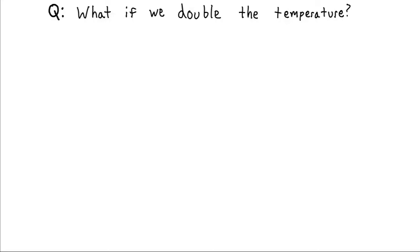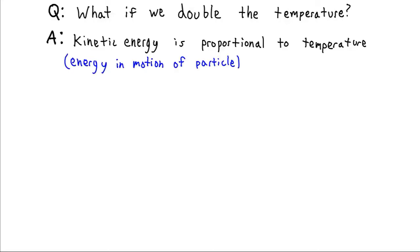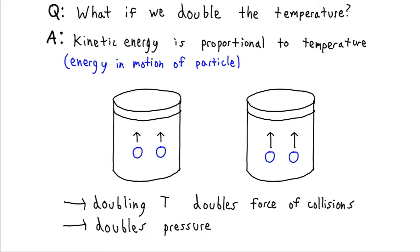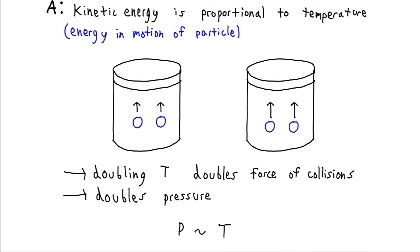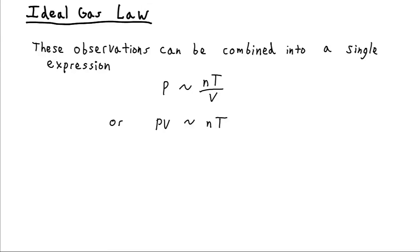One last consideration: what if we double the temperature? The kinetic energy — the motion energy of our particles — is directly proportional to the temperature. So if we double the temperature, we double the kinetic energy, which means we double the force with which the particle strikes the lid, and so we double the pressure. Pressure is proportional to temperature. We can combine these three insights: pressure is proportional to the number of particles times the temperature divided by the volume, or equivalently, pressure times volume is proportional to number of particles times temperature.